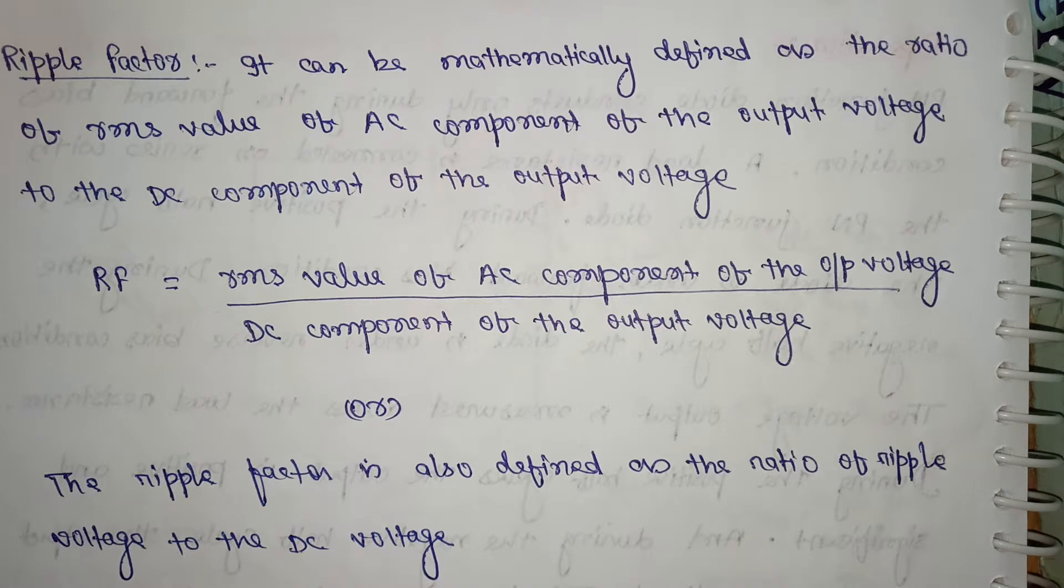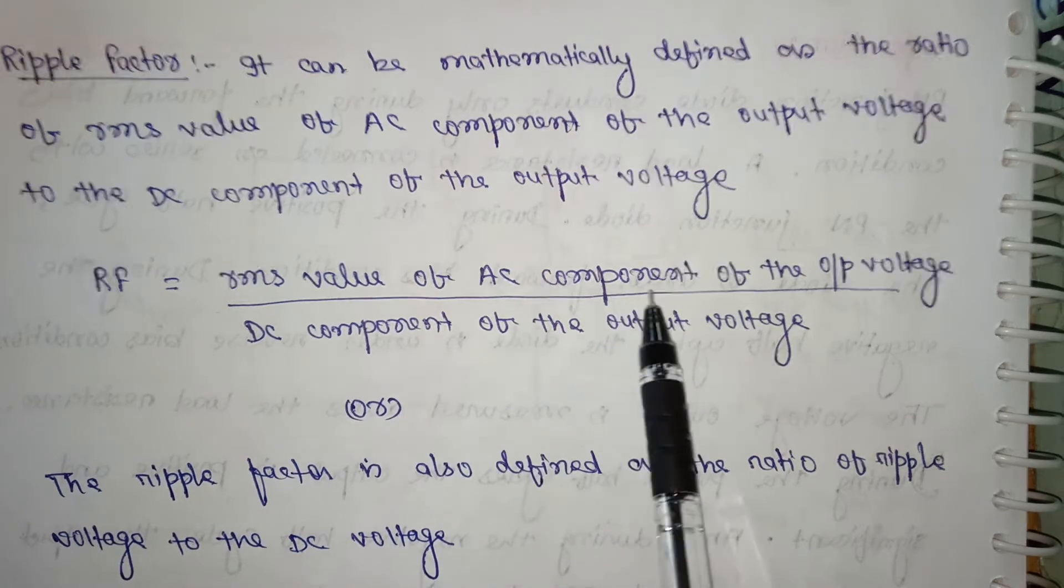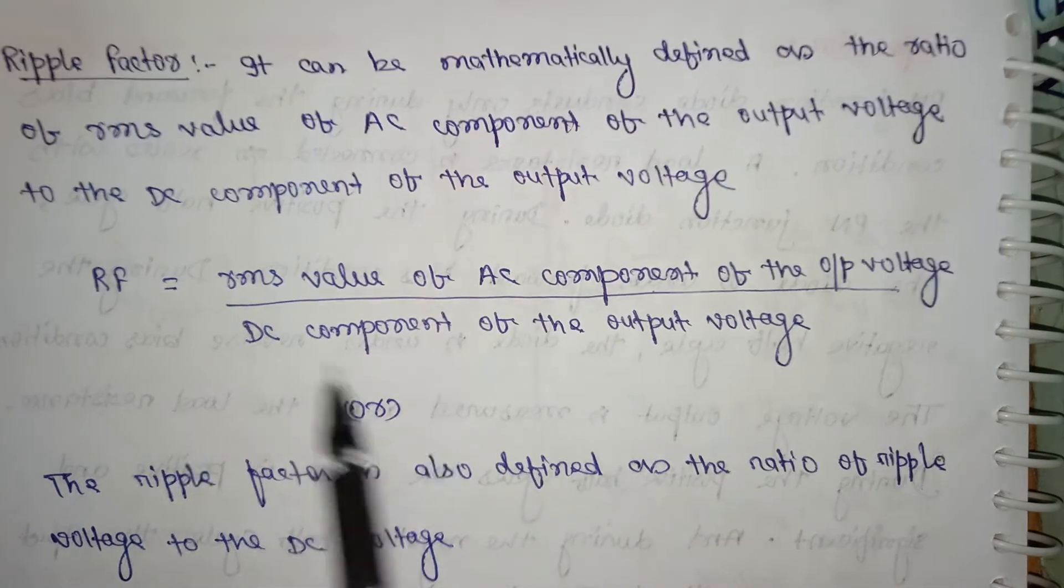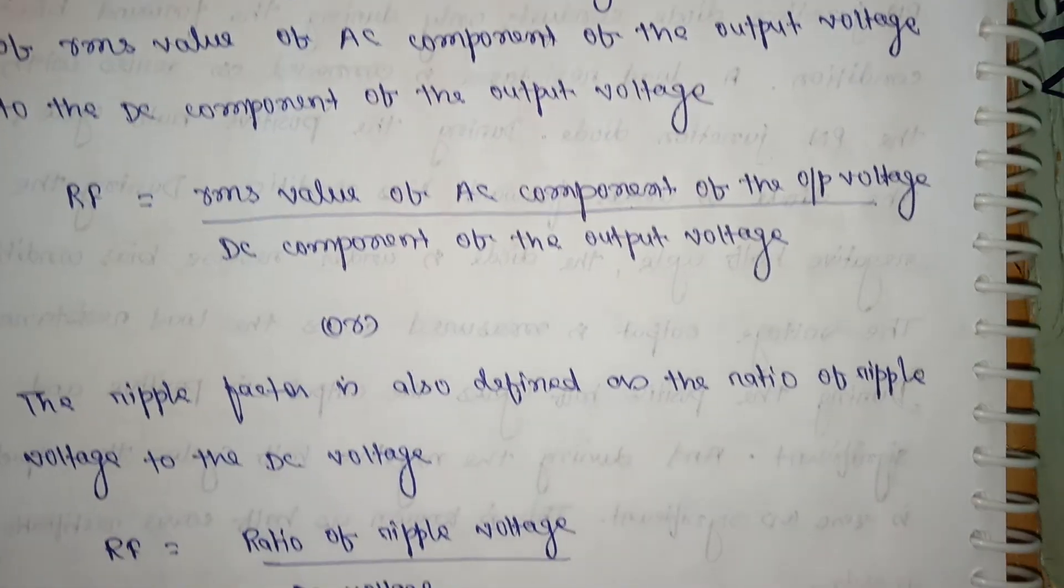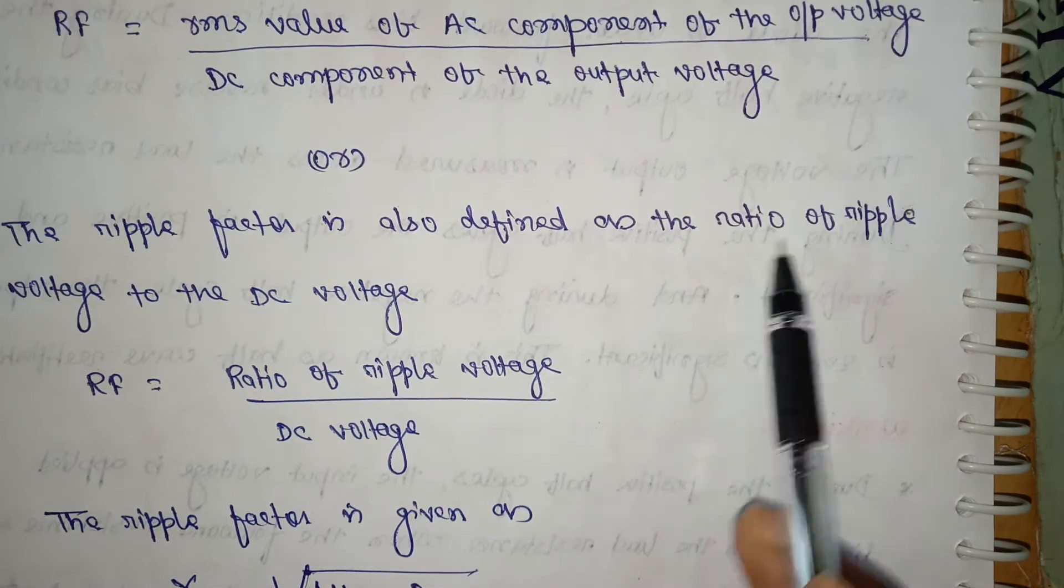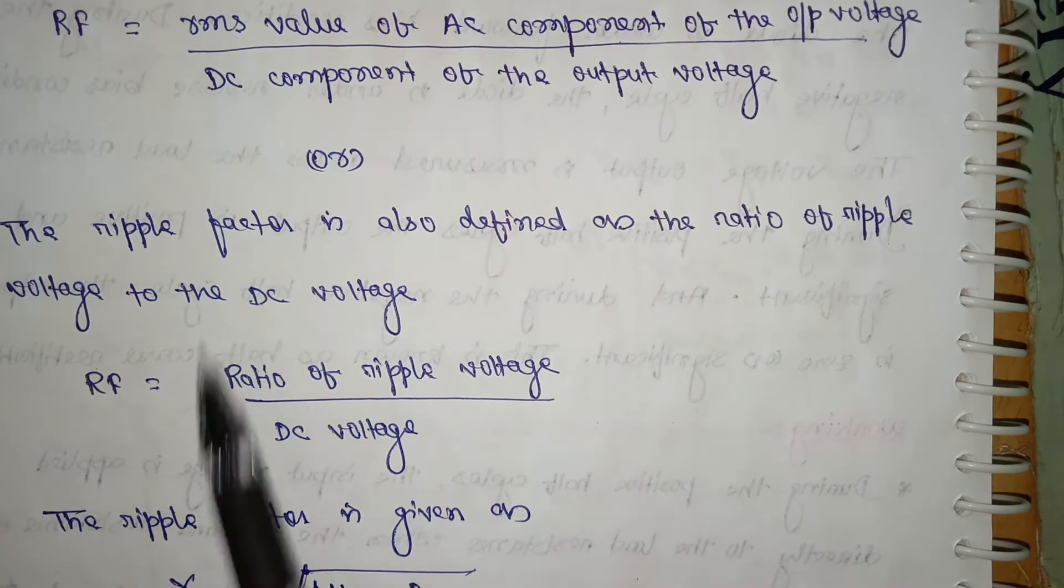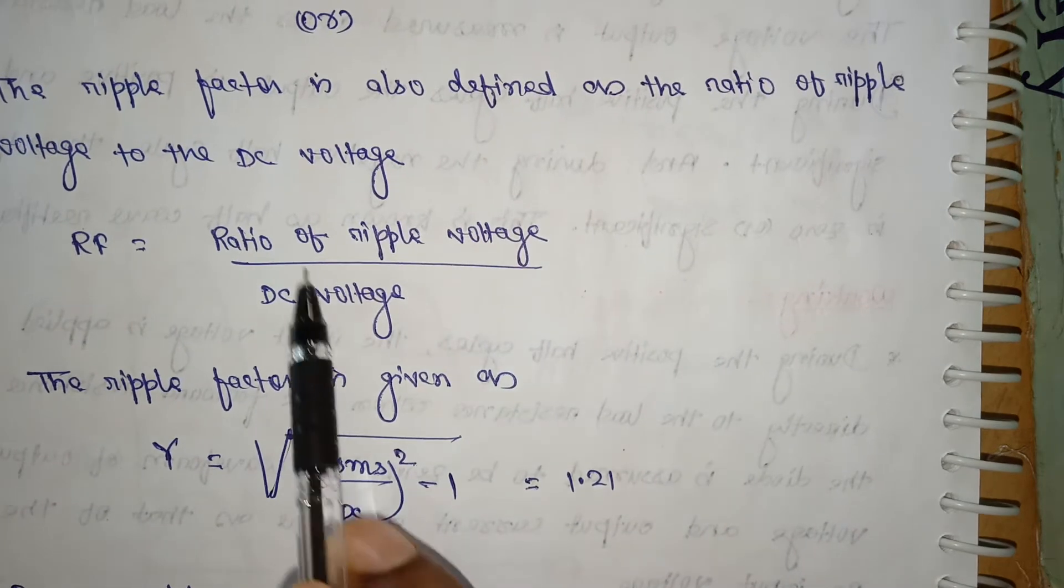It can be mathematically defined as the ratio of RMS value of AC component of the output voltage to the DC component of the output voltage. RF is equal to RMS value of the AC component of the output voltage to the DC component of the output voltage. The ripple factor is also defined as the ratio of ripple voltage to the DC voltage.